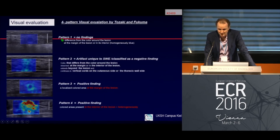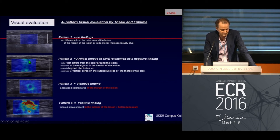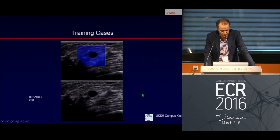To summarize before the training cases: pattern 1 is homogeneous blue — benign. Pattern 2 shows vertical artifacts around and within the lesion — also benign. Pattern 3 is suspicious. Pattern 4 is suspicious. Let's look at the first case.